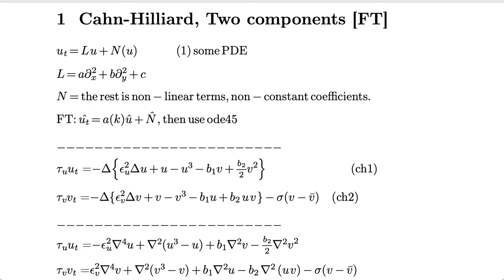Here I would like to show how to use the spectral method to solve a couple of Cahn-Hilliard equations in multiple dimensions. Before doing that, I first want to show the general method for a generic PDE, which looks like this. In this expression, L represents a linear operator which can contain several high-order derivatives and constant terms.